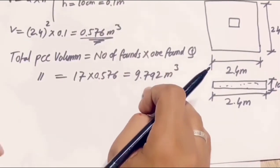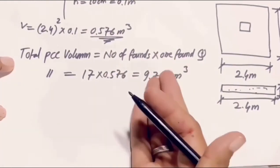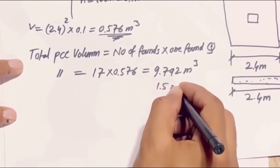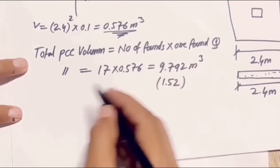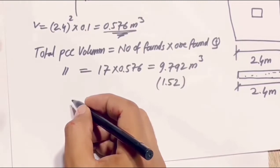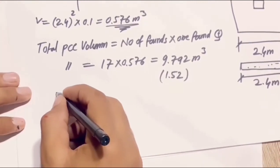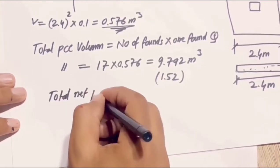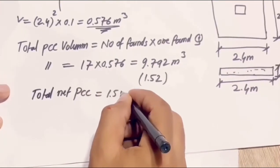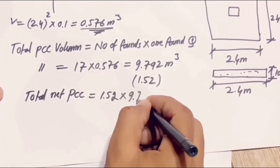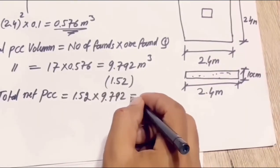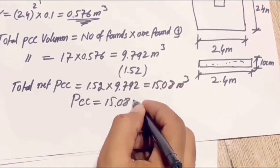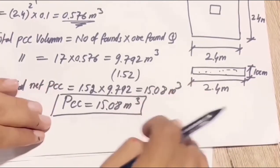This is only the wet concrete volume. We will convert the wet concrete to dry concrete. We have the coefficient for that, which is 1.52. We multiply 1.52 by the wet concrete volume: total dry PCC = 1.52 × 9.792 = 14.88 cubic meters, which we use as approximately 15.08 cubic meters for subsequent calculations.